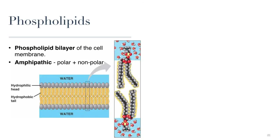Phospholipids are the main component of our plasma membrane, forming the phospholipid bilayer — a layer of phospholipids that make up the bulk of the cell membrane, forming a barrier between the outside of the cell and the inside of the cell.